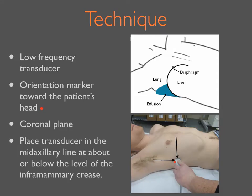To detect a pleural effusion, you should use a low-frequency curvilinear or phased array transducer in order to achieve adequate depth of penetration. Orient the transducer with the marker towards the patient's head in the coronal plane and roughly where the mid-axillary line and the inframammary crease intersect.